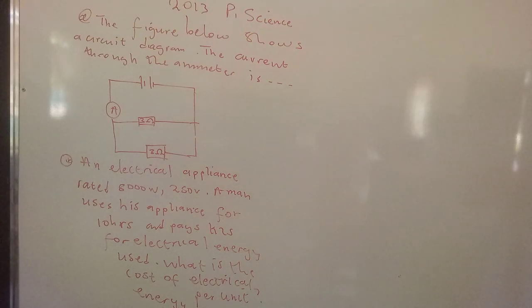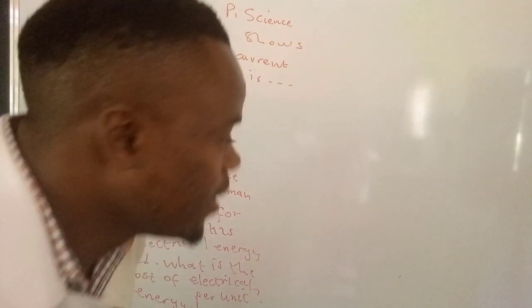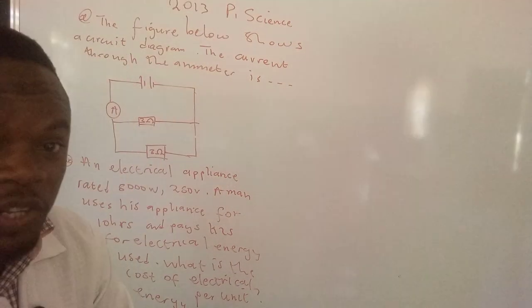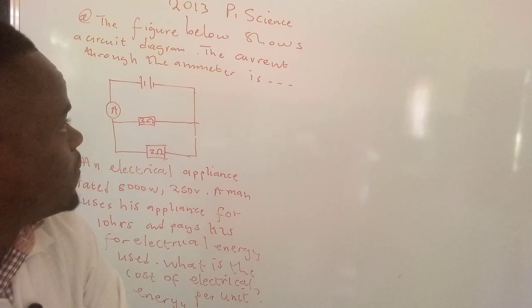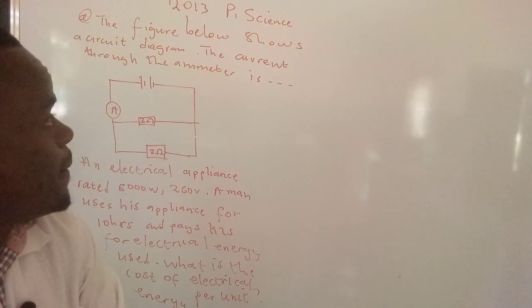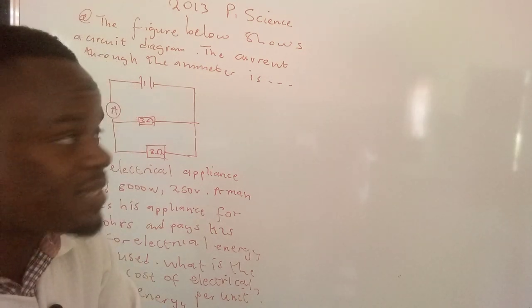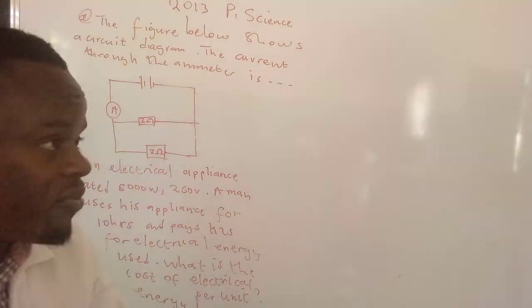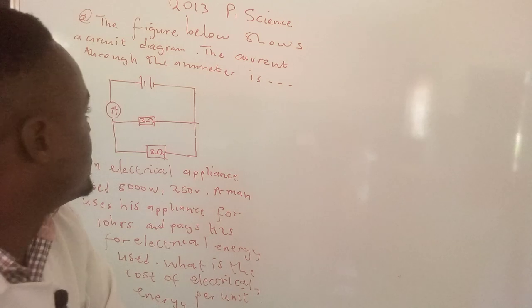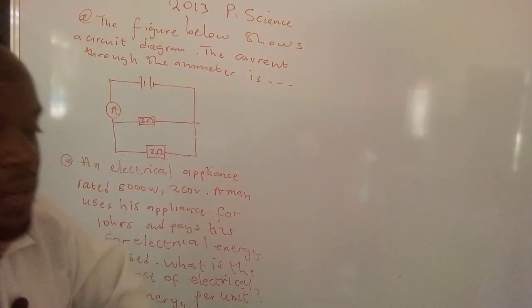Hi, this is Doc Mountain and I welcome you to my YouTube channel. In our tutorial today we're going to look at a past paper-based problem which was extracted from 2013 paper one science. The problem reads: the figure below shows the circuit diagram, the current through the ammeter is...